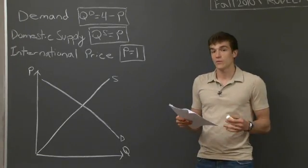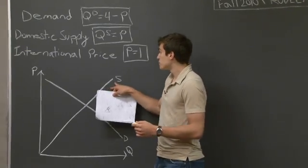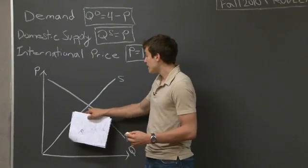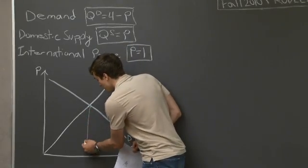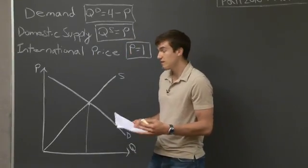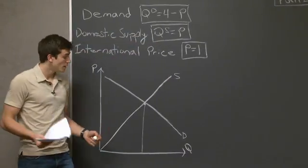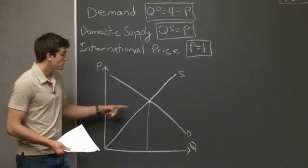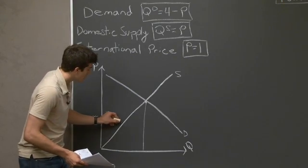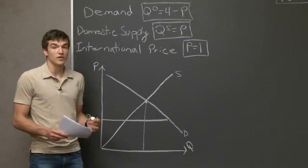Let's pretend for a second that we're in autarky where there's no trade at all. In that case, the supply function — our domestic supply — and our demand function are going to be equal. Now what's going to happen is the international price will come in when we open up our borders, and it's kind of going to function like a price cap. So instead of the price being way up here with only domestic suppliers, the price is going to shift down to p equals 1, the equilibrium price.